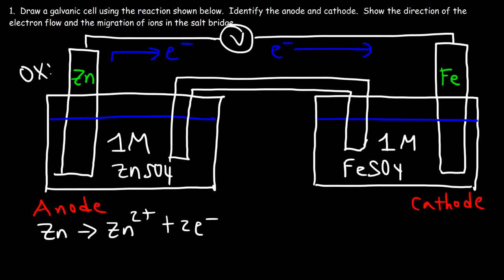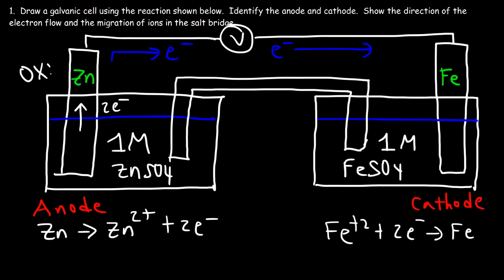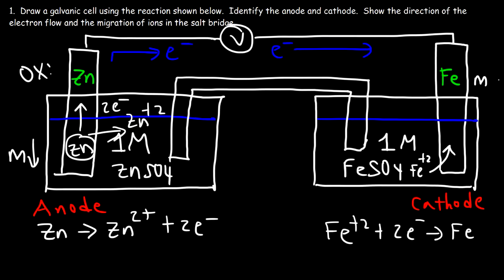The electrons flow from the zinc anode to the iron cathode. At the cathode, the iron ions in solution travel towards the cathode, pick up two electrons, and turn into iron metal. A zinc atom leaves the electrode and enters the solution as the Zn 2+ ion, while an Fe 2+ ion leaves the solution and deposits itself on the cathode. So the mass of the anode decreases but the mass of the cathode increases over time.